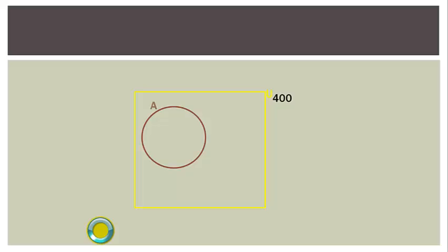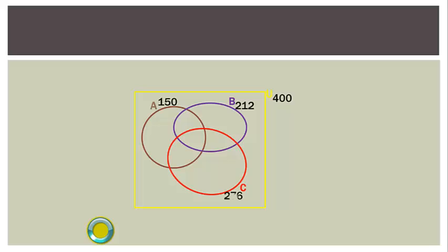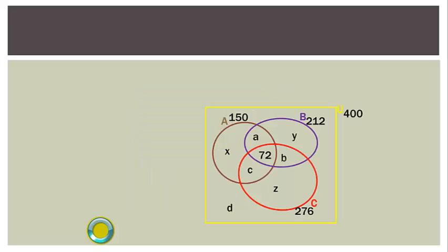Draw a rectangle for set U with three intersecting subsets: A (150 men), B (212 married), and C (276 university graduates). Enter 72 for the intersection of all three. Label the regions: A, B, C for the pairwise-only intersections, X for only-A, Y for only-B, Z for only-C, and D for outside all three.